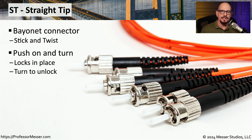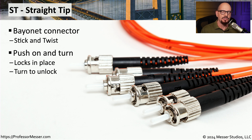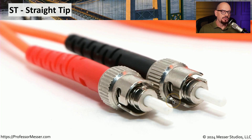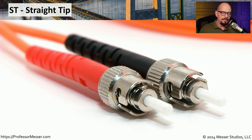When you're working inside a rack with a large number of cables and fiber, it can be very easy to accidentally dislodge one of those connections. That's why we have all of these different locking mechanisms for these different interface types. Here's a closer view of the ST connector. There is a protective ferrule around the fiber, which you can barely see in this picture. You can easily see the bayonet connector where you would plug it in and twist it in place so that it is locked into that interface.